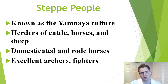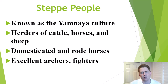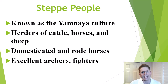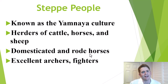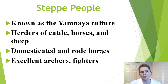But who are the steppe people? They lived on the vast plains of Eurasia millennia ago, known as the Yamnaya culture — some of the early pastoral humans. They herded cattle, horses, and sheep and depended on them to survive. They domesticated and rode horses long distances, and they were excellent archers who could shoot from moving horses. That made them great fighters, and they were successful in battle.